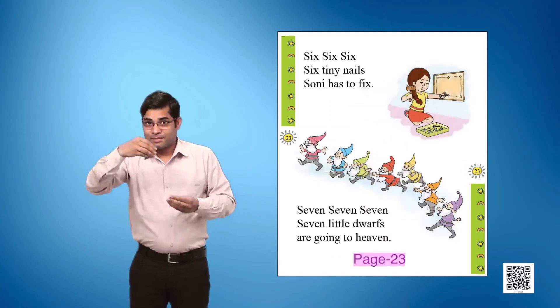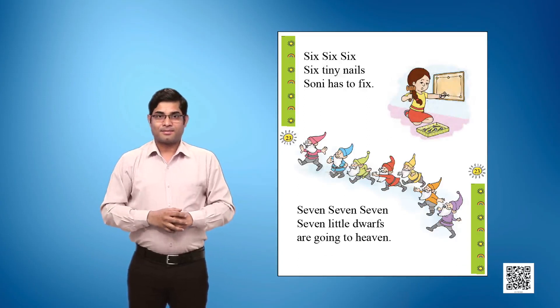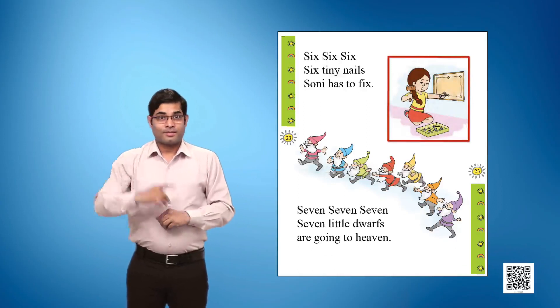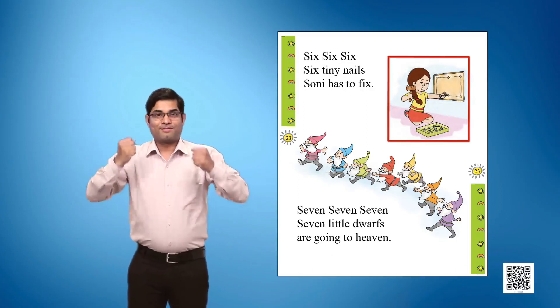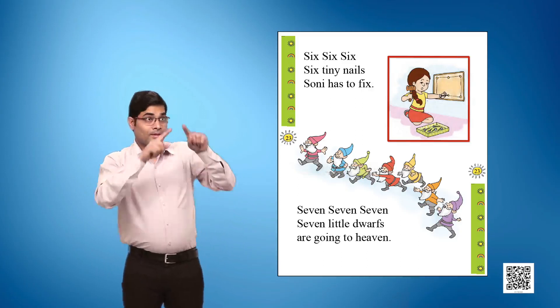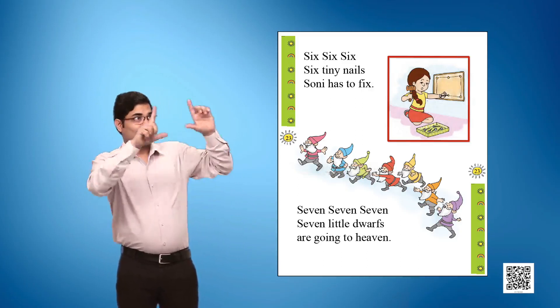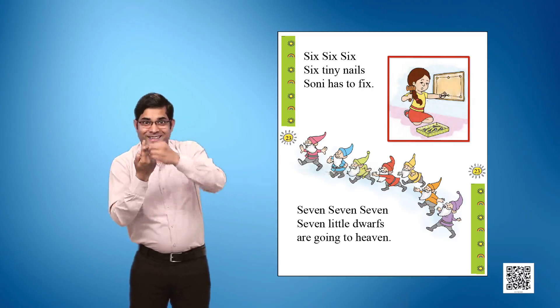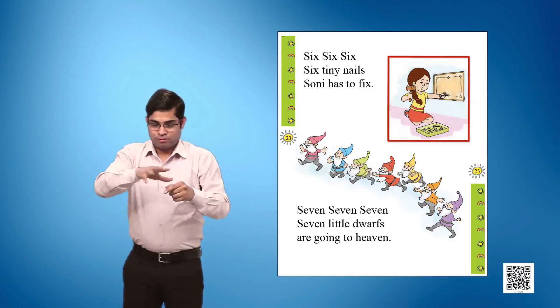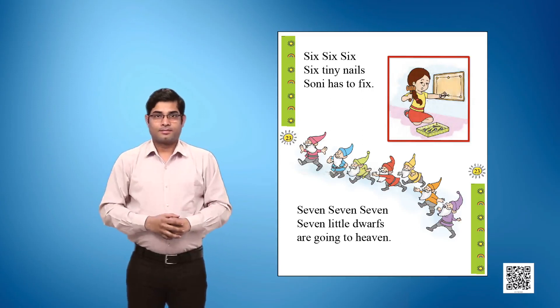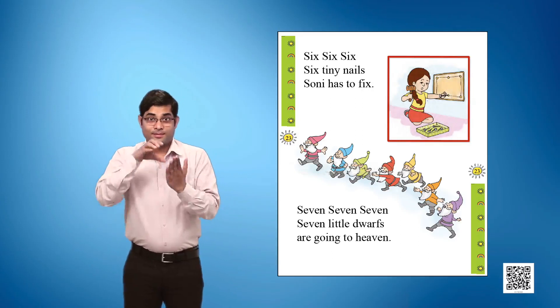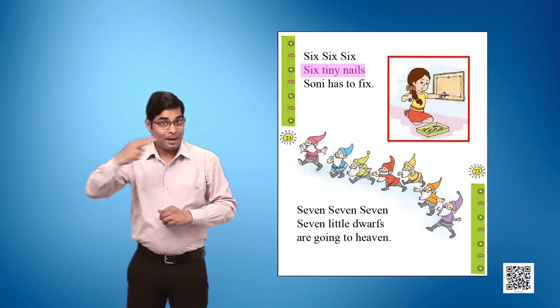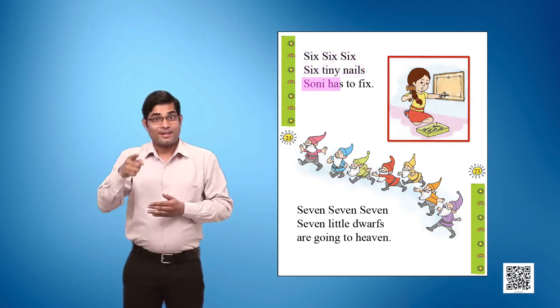Page 23, Picture 1 shows a girl sitting on the floor, hammering a nail into a rectangular board hanging on the wall. A box of nails is lying on the floor. Text given: Six Six Six, Six tiny nails Sony has to fix.